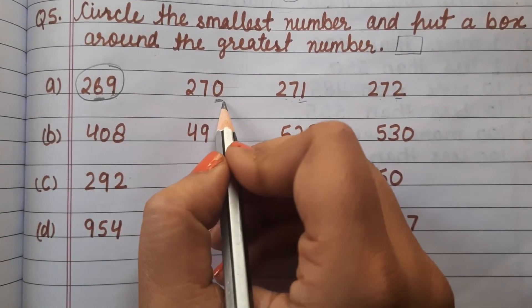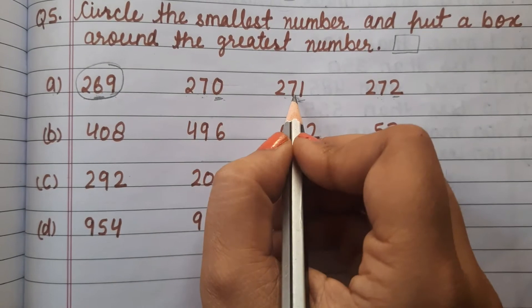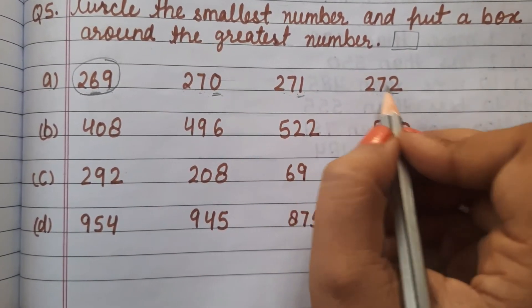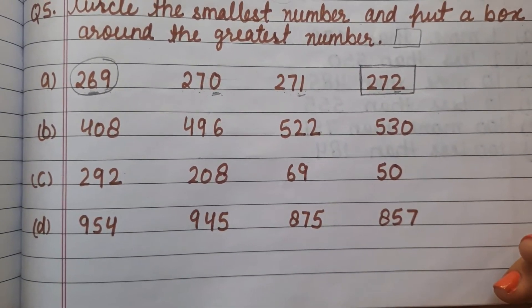The greatest number is 270, 271, 272. Obviously 272. In counting, 272 comes last, so it's the biggest. Therefore 272 is the largest number.